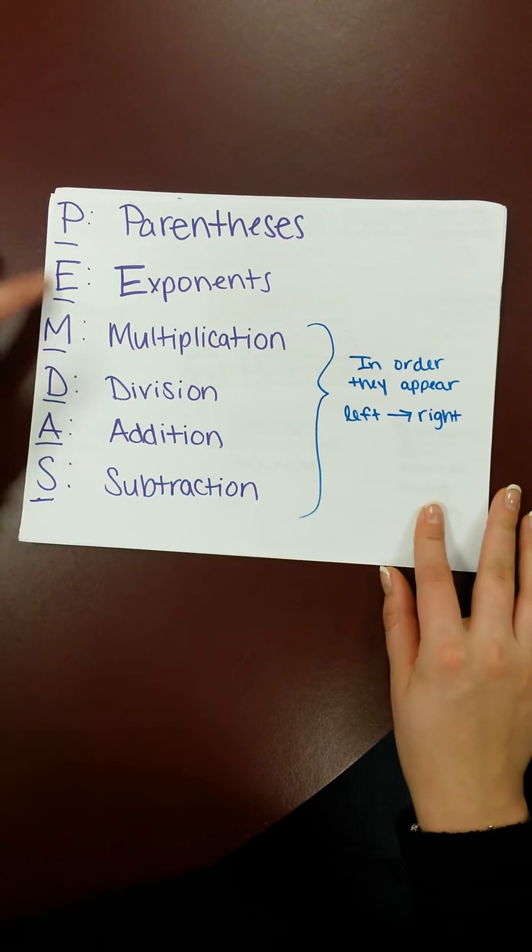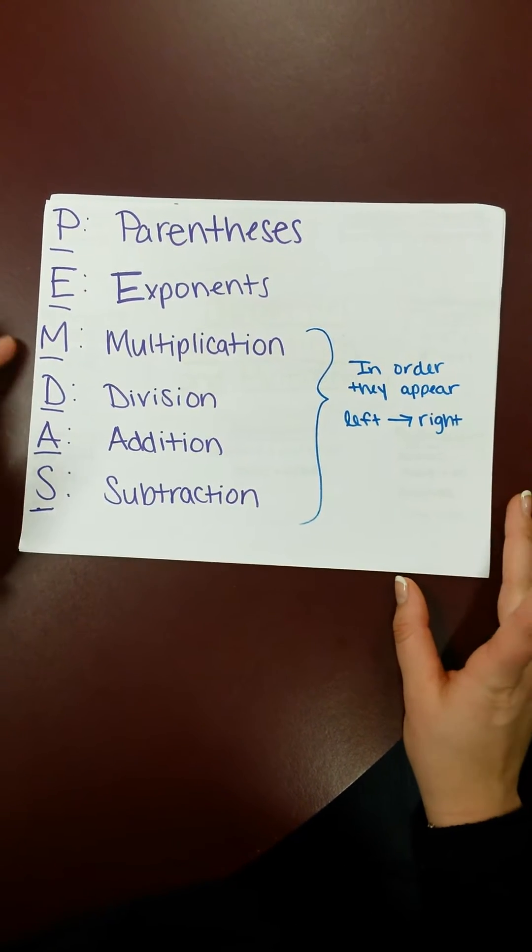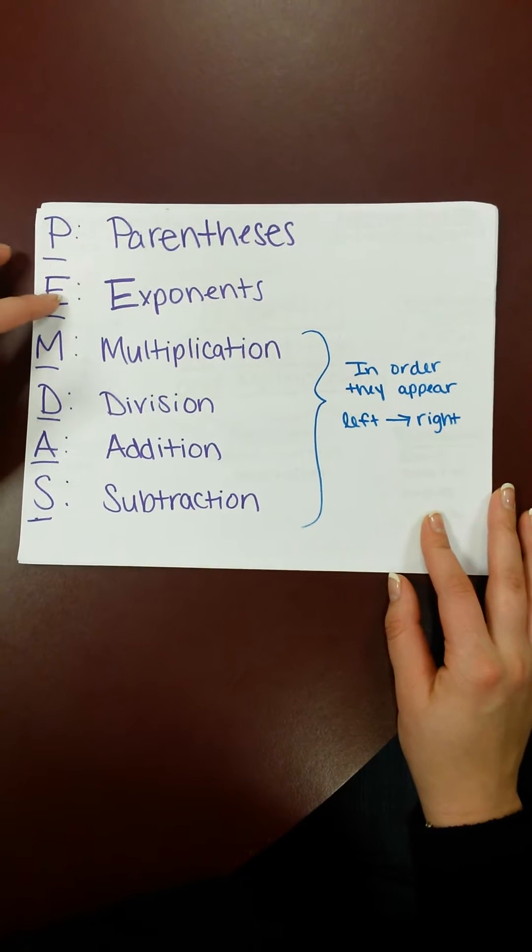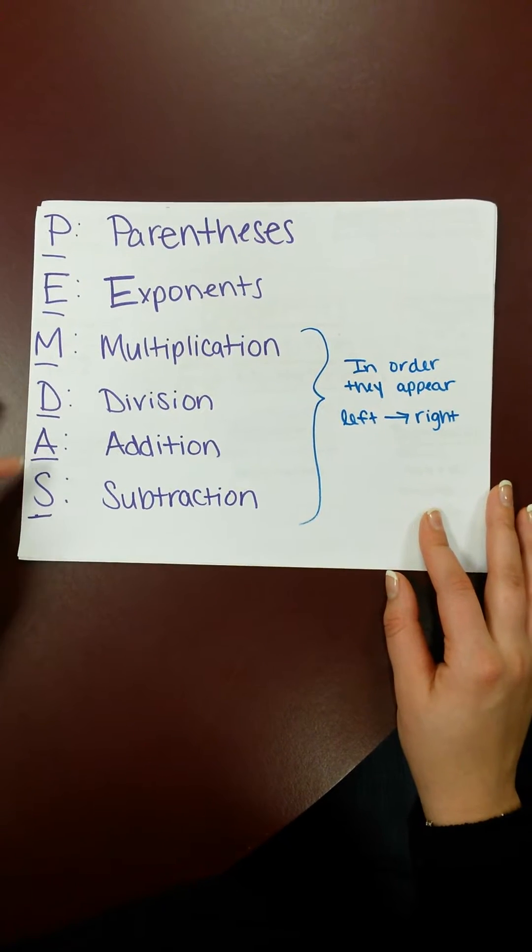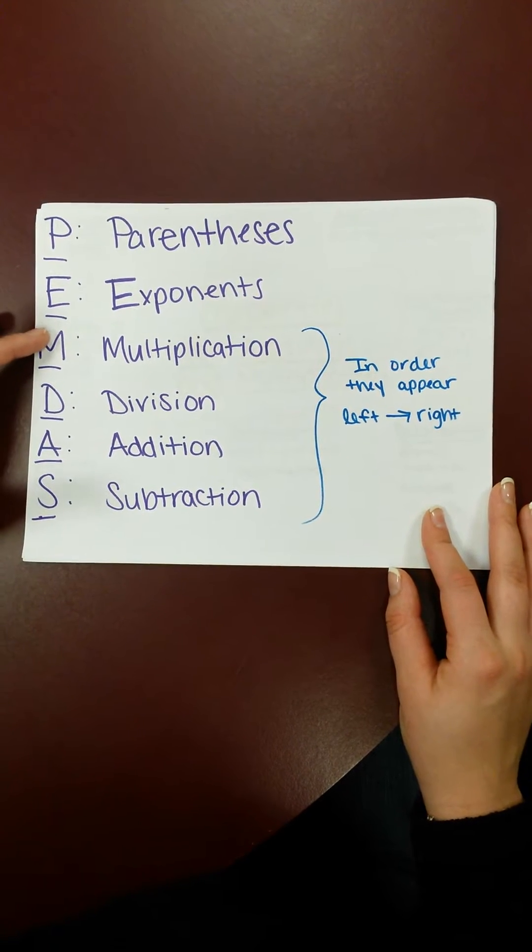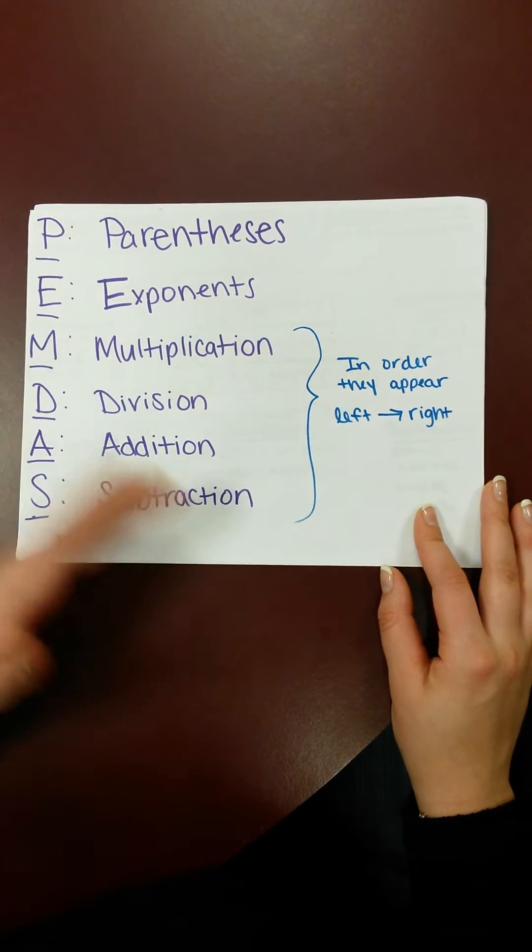So the next thing to remember is PEMDAS, you may have learned this in middle school or so, but it's just the order of operations, which is parentheses, exponents, multiplication, division, addition, and subtraction, and these last four need to go in the order that they appear from left to right.